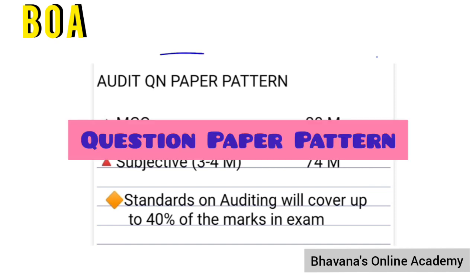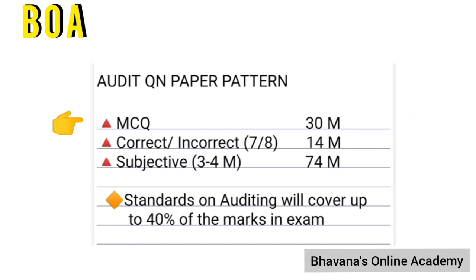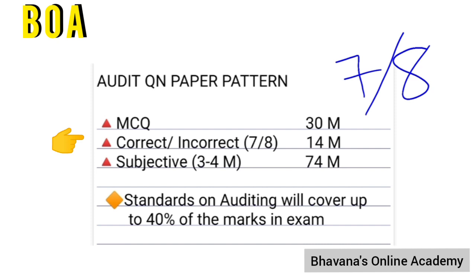First, let's look at the audit question paper pattern. Your question paper consists of MCQs, correct or incorrect, and a subjective paper with short and long answers. Your MCQs come for 30 marks, correct or incorrect comes for 14 marks, and the subjective paper comes for 74 marks. In MCQs you can have one-mark or two-mark questions. For correct or incorrect, you get eight questions and must answer any seven, at two marks each, totalling 14 marks.